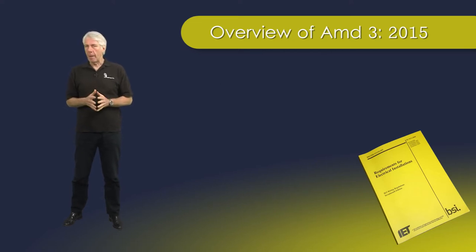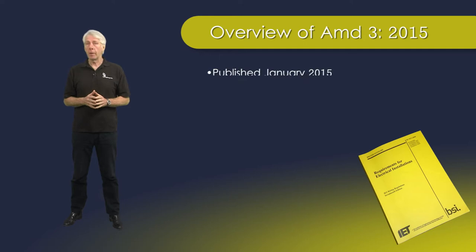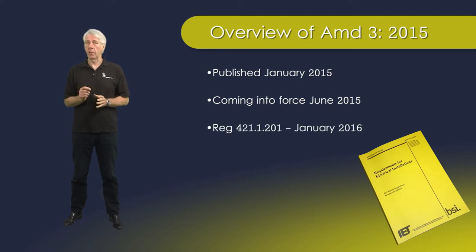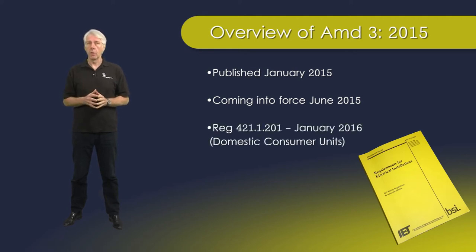The Third Amendment of BS 7671 was published in January 2015, coming into effect in June the same year. However, there is one section concerning consumer units which will come into force in January 2016.